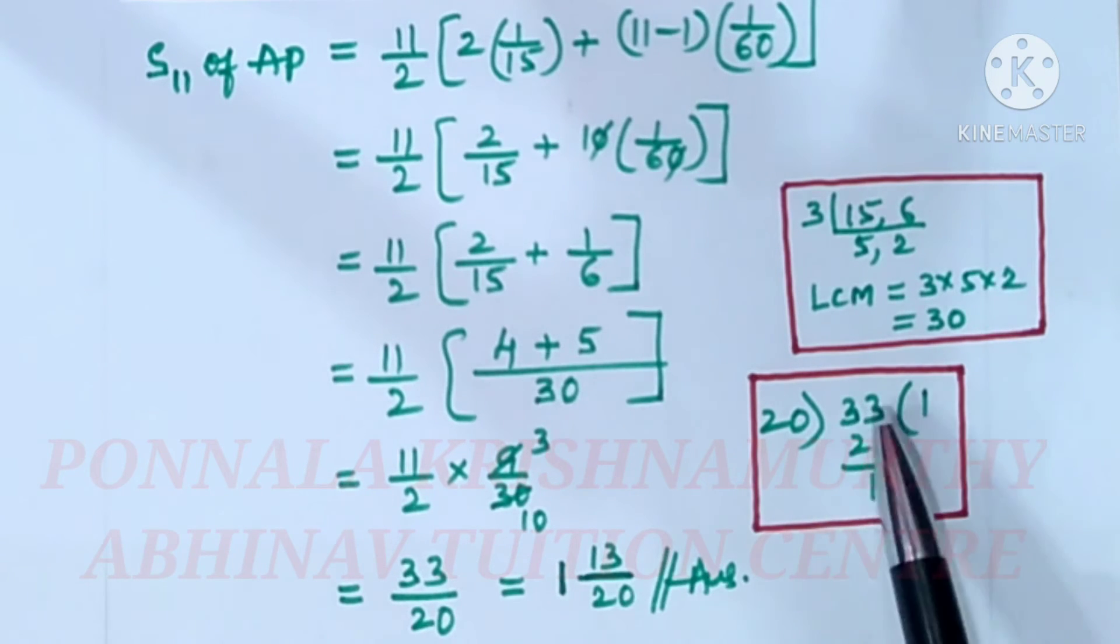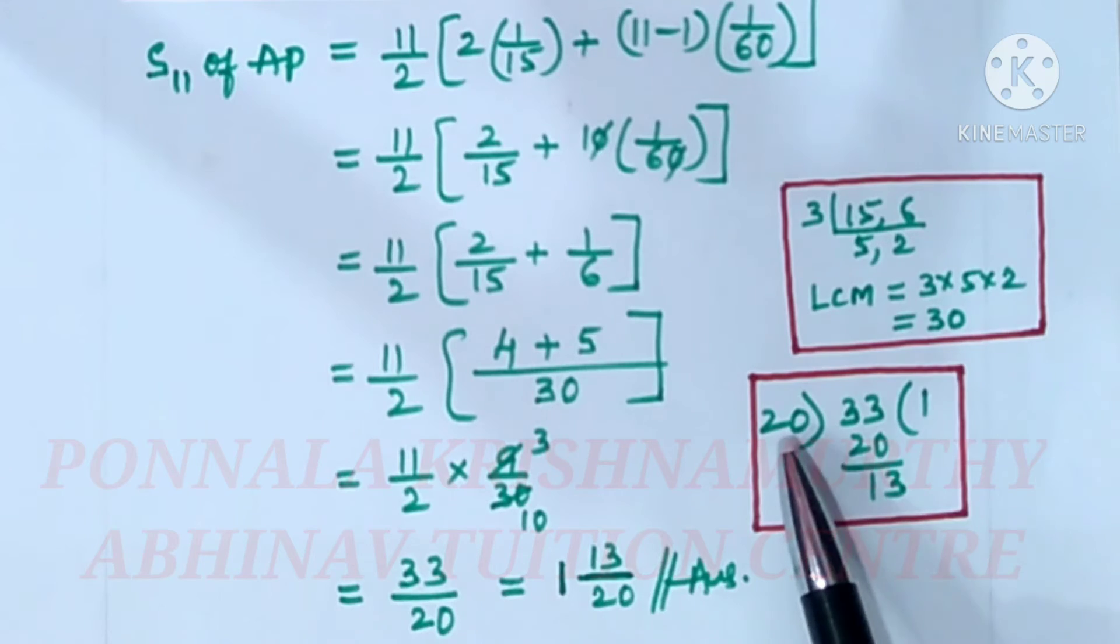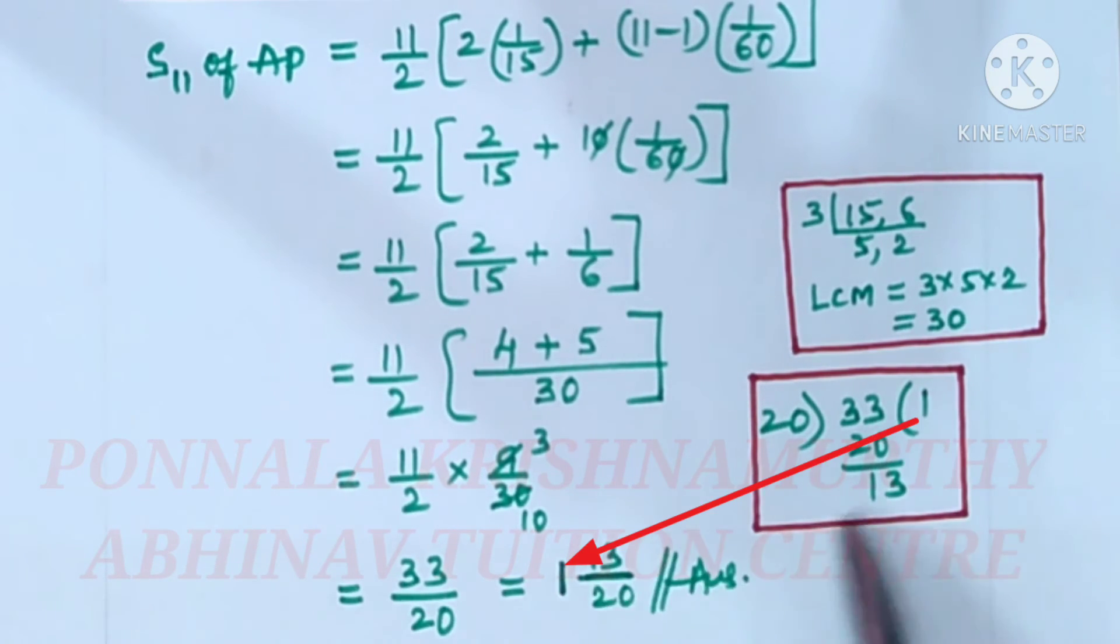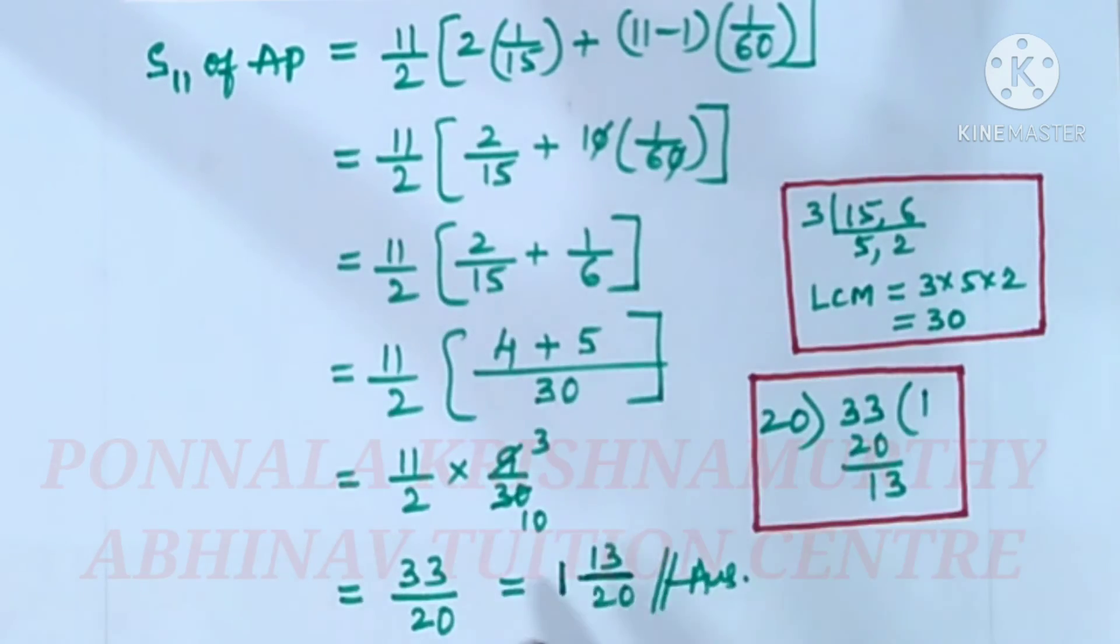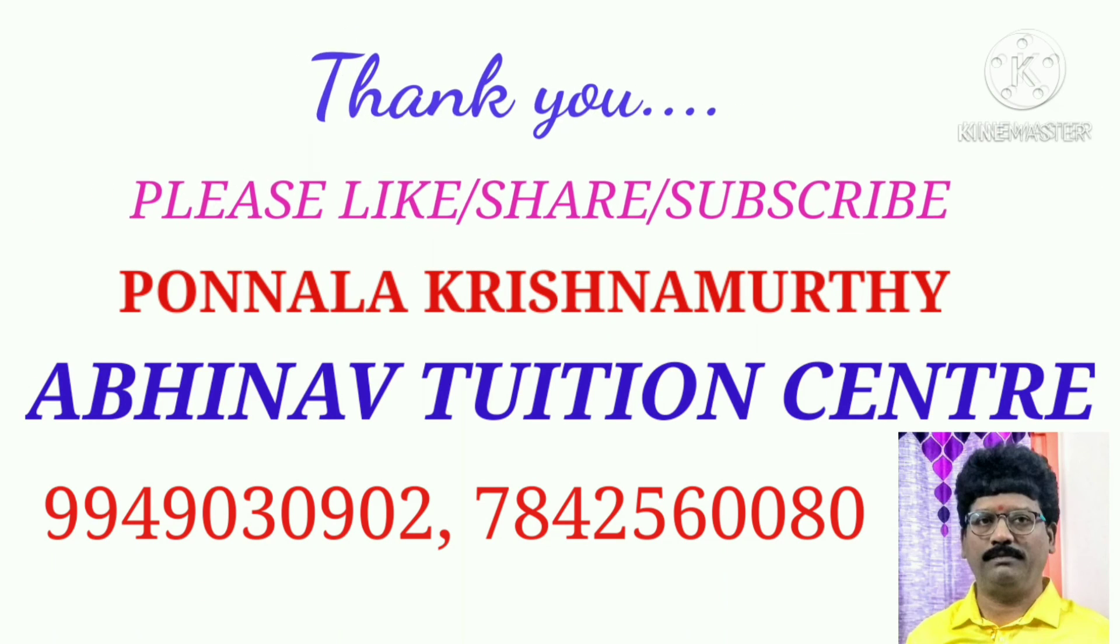If we divide 33 by 20 we get this one. If we write this improper fraction as mixed fraction, this becomes 1 13/20. So S_11 of AP is 33/20 or 1 13/20, answer.